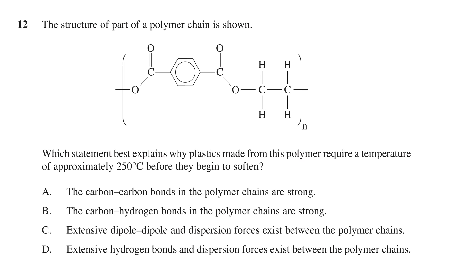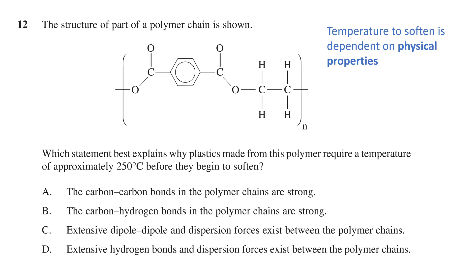Moving on, question 12 states: the structure of a part of a polymer chain is shown, followed by a structural diagram of the repeating unit. The question asks which statement best explains why plastics made from this polymer require a temperature of approximately 250 degrees Celsius before they begin to soften. As the question refers to the softening of the polymer with increasing temperature, we are dealing with the physical properties of the polymer. The polymer itself remains intact, but the connections between molecules weaken to allow movement and softening.